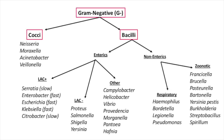Here we see the gram-negatives. We can see that this group is quite large. We can still divide them into cocci and bacilli. Under the cocci we have Neisseria, Moraxella, Acinetobacter, and Veillonella.